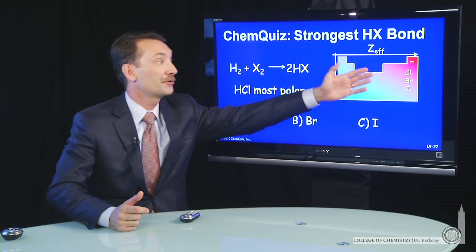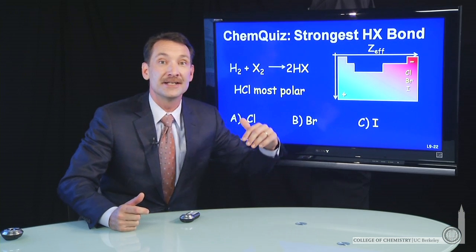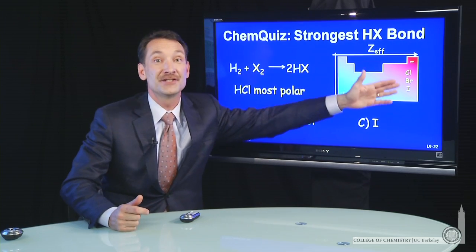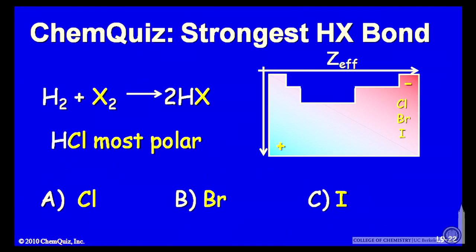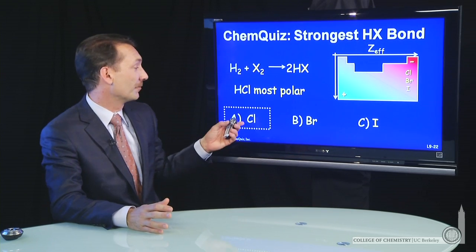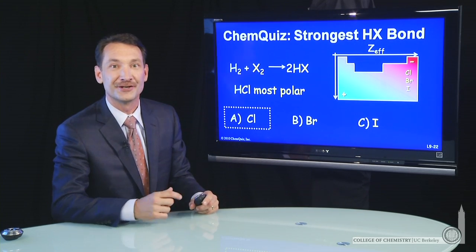Well, we know the trend in electronegativity tells us chlorine is the most electronegative. Compared with hydrogen, chlorine would have the biggest difference in electronegativity, the most polar bond, and the strongest bond. It would release the most energy when it's formed. Chlorine is the answer here.